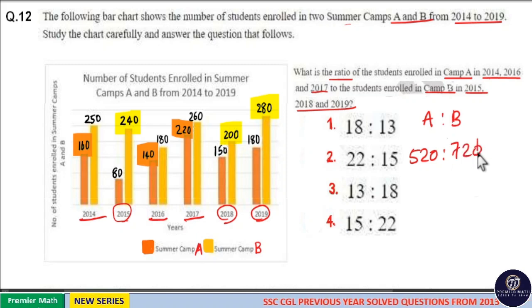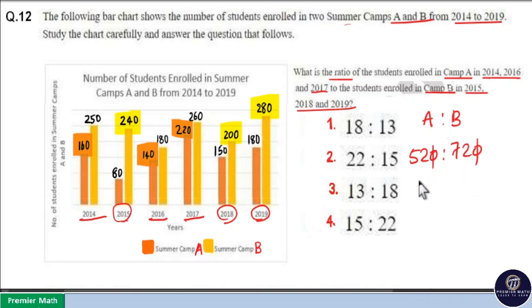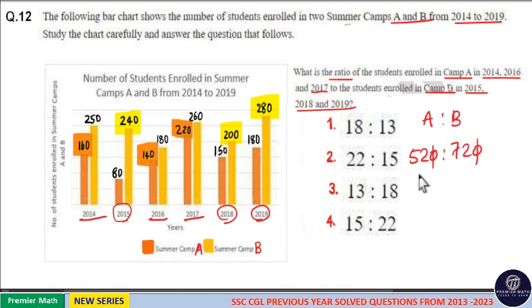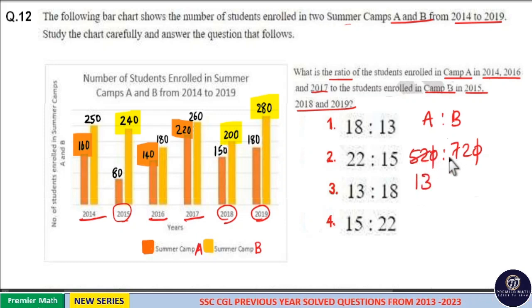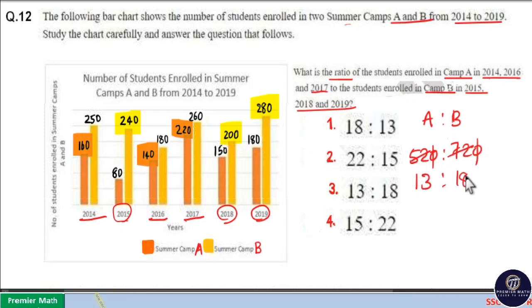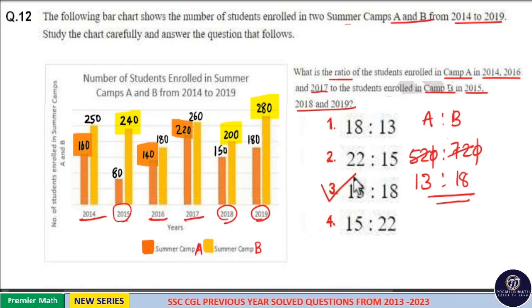Now the ratio is 520 to 720. Dividing both by 4: 4 goes 13 times into 52 and 18 times into 72. So the ratio is 13:18, and option 3 is your answer.